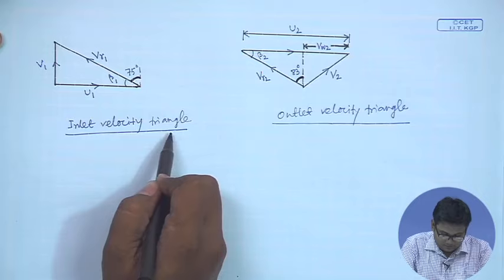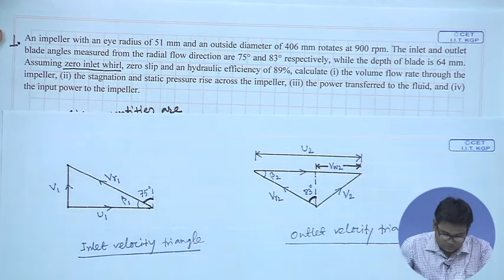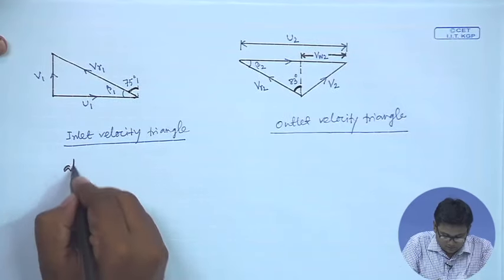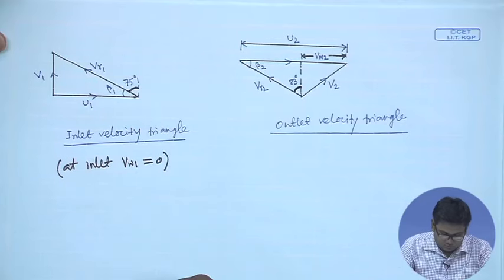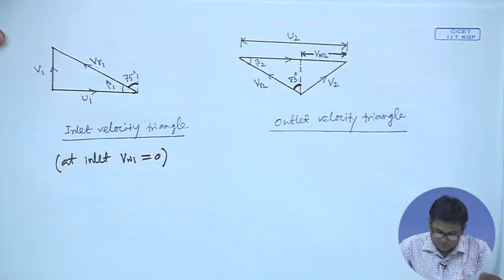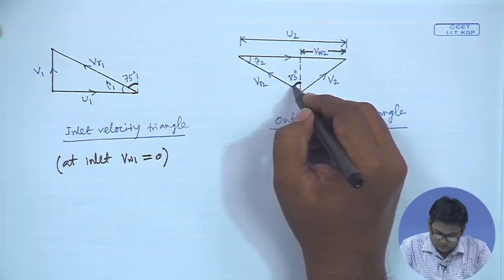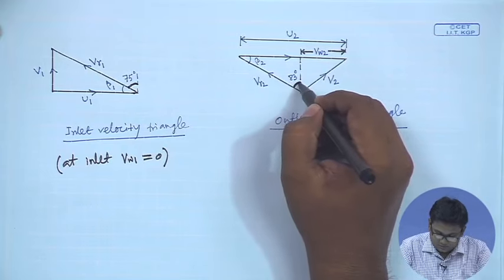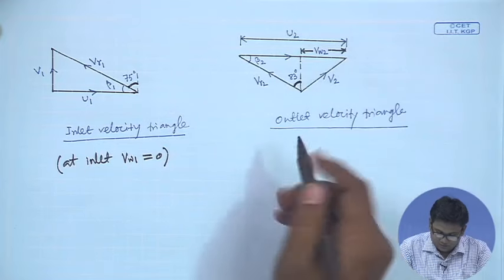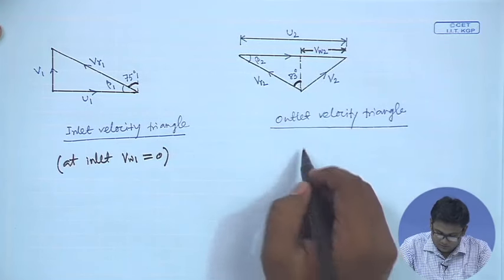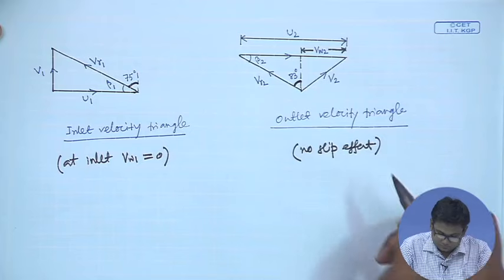At the inlet velocity triangle, we have used the fact that there is zero inlet swirl velocity. So at inlet, Vw1 = 0. At the outlet, we have used the fact of zero slip, meaning the radial velocity leaves at the angle specified by the blade angle. In the absence of slip, we have drawn this diagram accordingly.